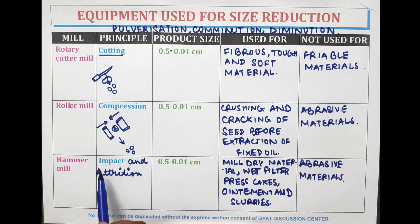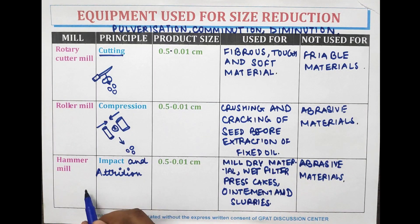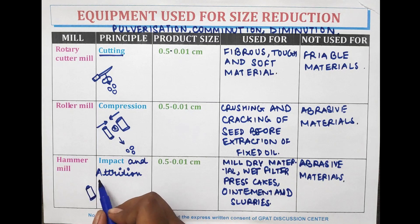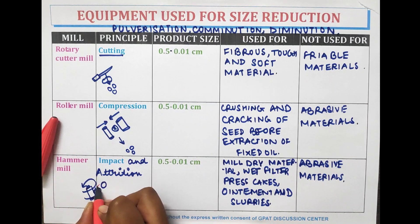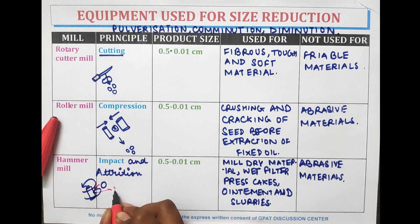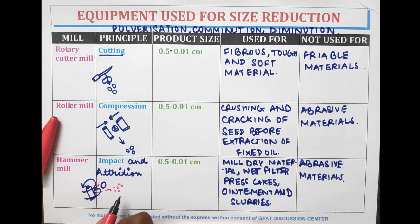In impact, the operation involves hammers or bars rotating at high speed. When a material is pushed towards the rotating hammer mill, the material strikes and breaks apart into smaller particles. This action continues until the particles of the required size are obtained.